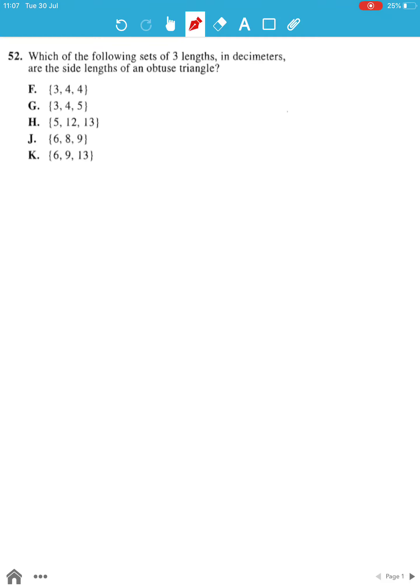For question 52, we solve the question using elimination of options. Our first option is option F, which has two sides to be equal. An obtuse triangle does not have any length to be equal, hence option F is eliminated.